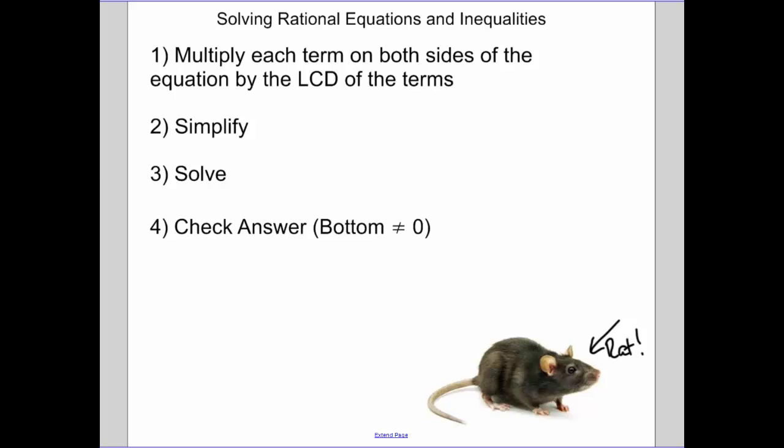Our steps in solving rational equations: multiply each term on both sides by the least common denominator of the terms. Simplify and cross stuff out - it should make your denominator go away. Then solve and make sure that your bottom doesn't equal zero. That's going to be key.